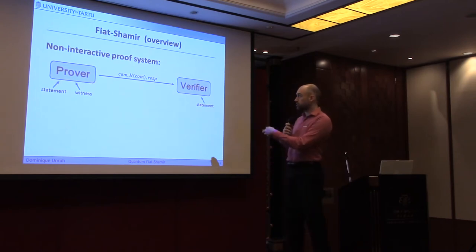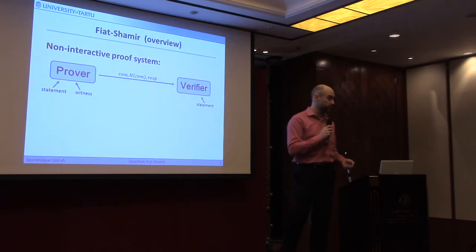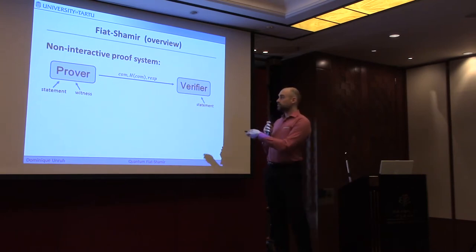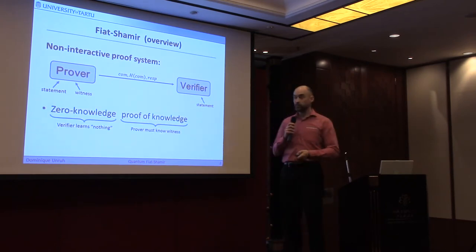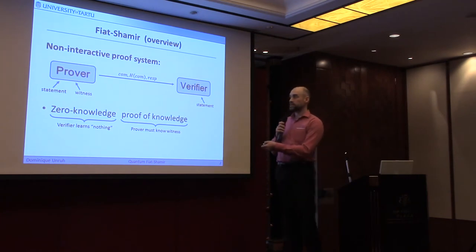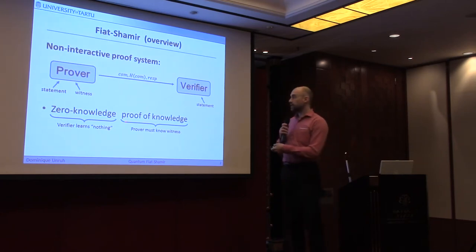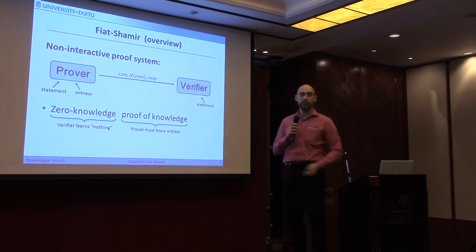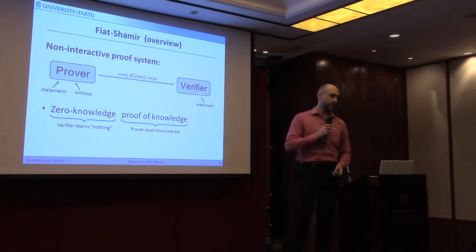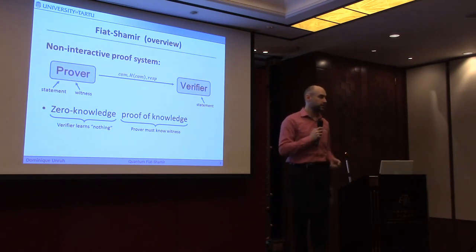A certain message is sent over the network — just one message — and the verifier, who also knows the statement but doesn't know the proof, will be able to verify that the statement is actually correct. The verifier should not learn anything besides the fact that the statement is true, and it should usually be a proof of knowledge, meaning the verifier should be convinced that the prover actually knows the witness for the statement. These proof systems are quite common in all kinds of cryptographic schemes.